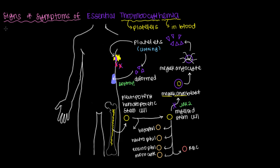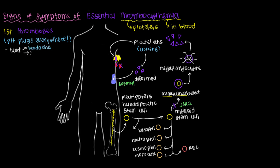One of the earliest things that can happen is thromboses — clots — which makes sense because you have so many platelets making platelet plugs everywhere. In the head, this can cause symptoms such as headache, dizziness, weakness, facial paralysis, or slurred speech. This is not too different from a stroke, which is essentially what happens when platelet plugs accumulate in the brain.